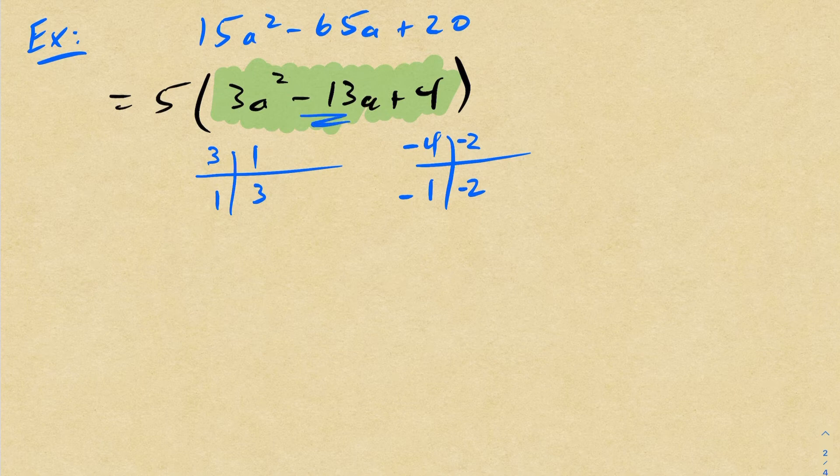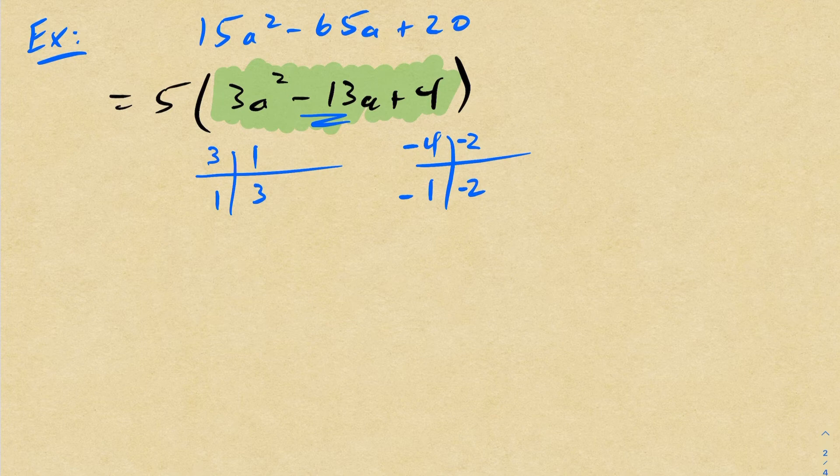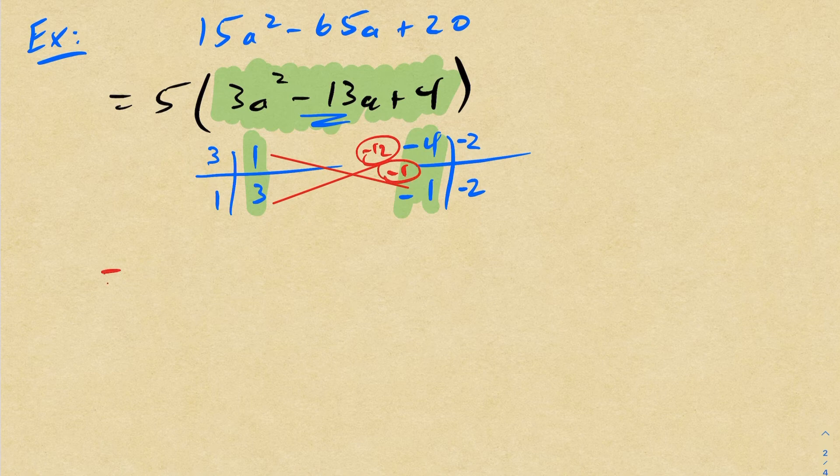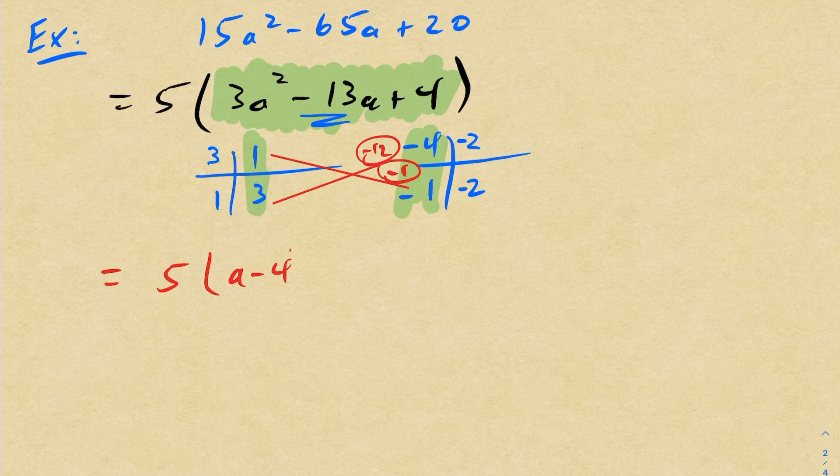So going through combinations that work here, you can see fairly quickly these two work, right? You'll notice these two work because 1 times 1 is negative 1, and 3 times negative 4 is negative 12. Adding these together, I get negative 13. So this is going to be 5 times a minus 4, 3a minus 1. And now we're fully factored.